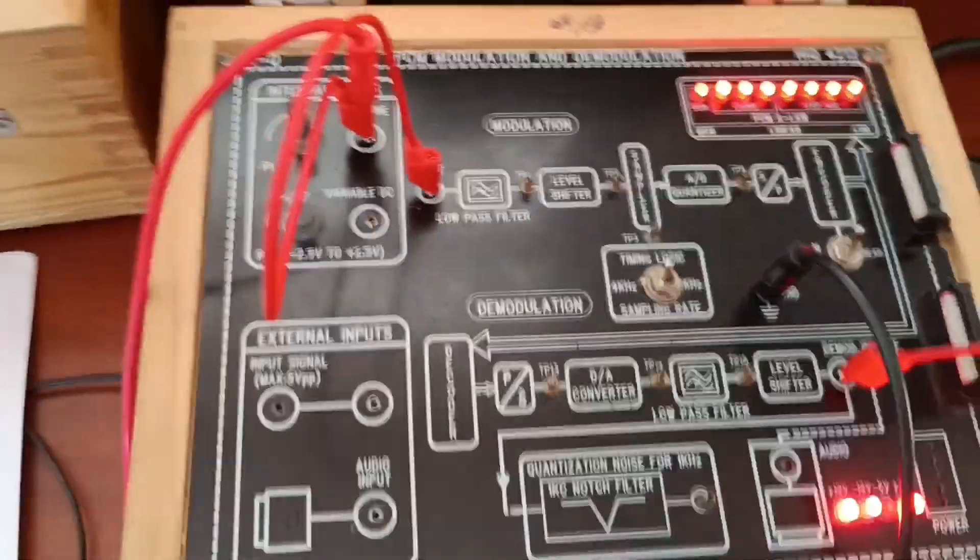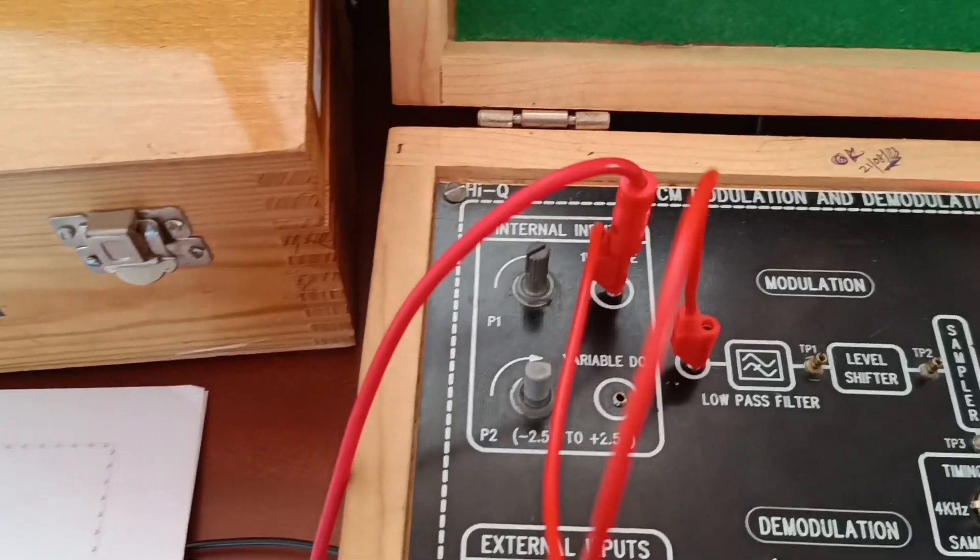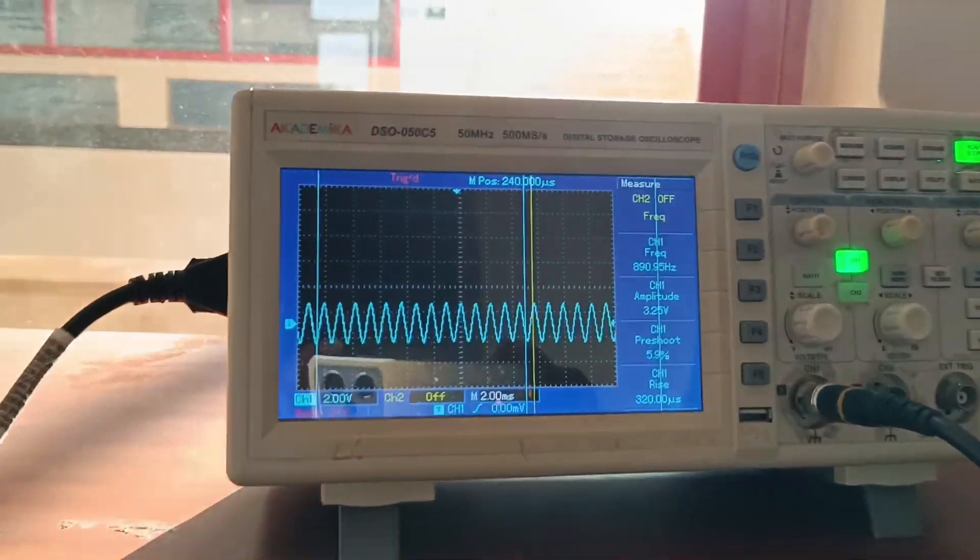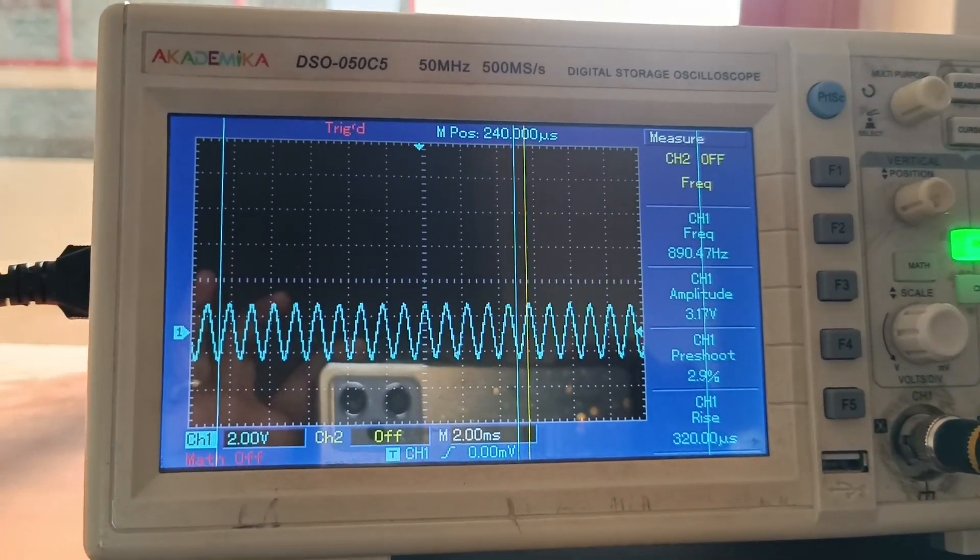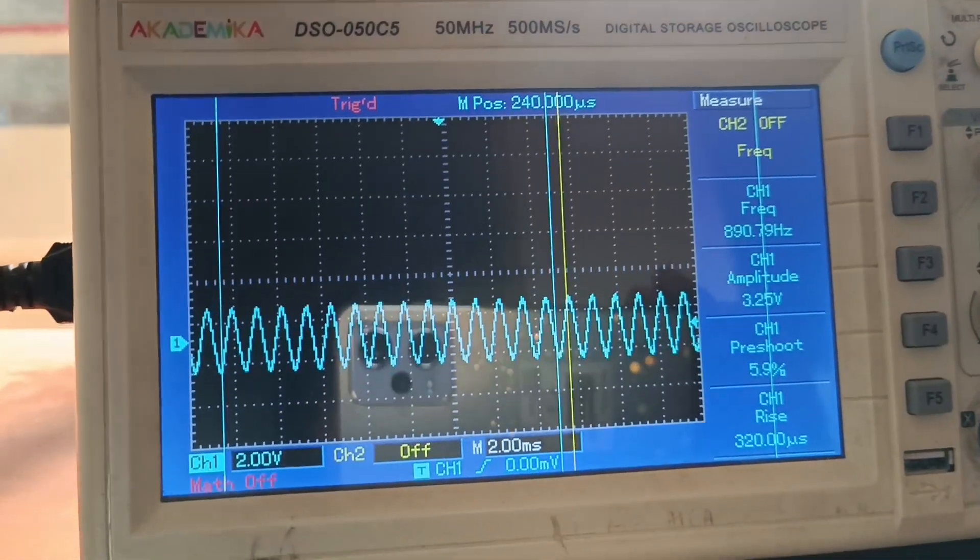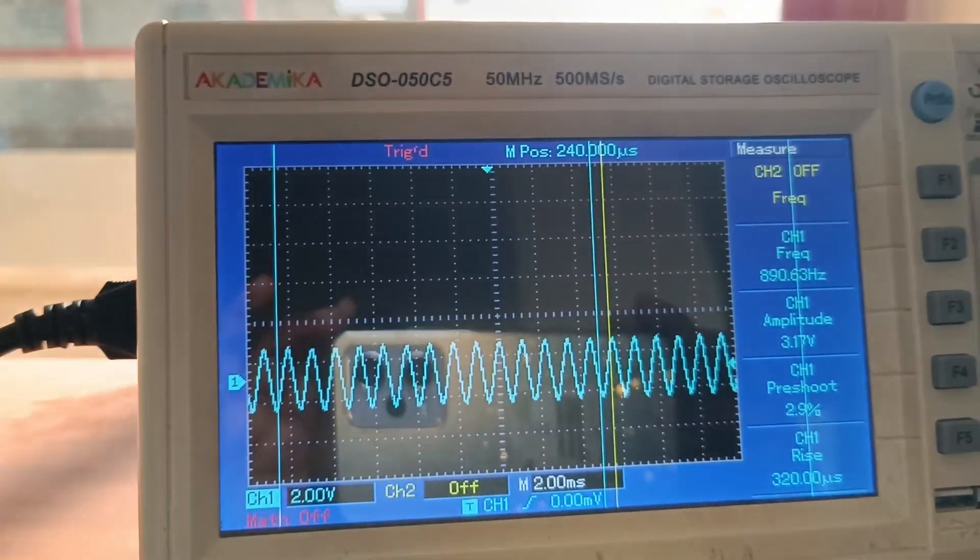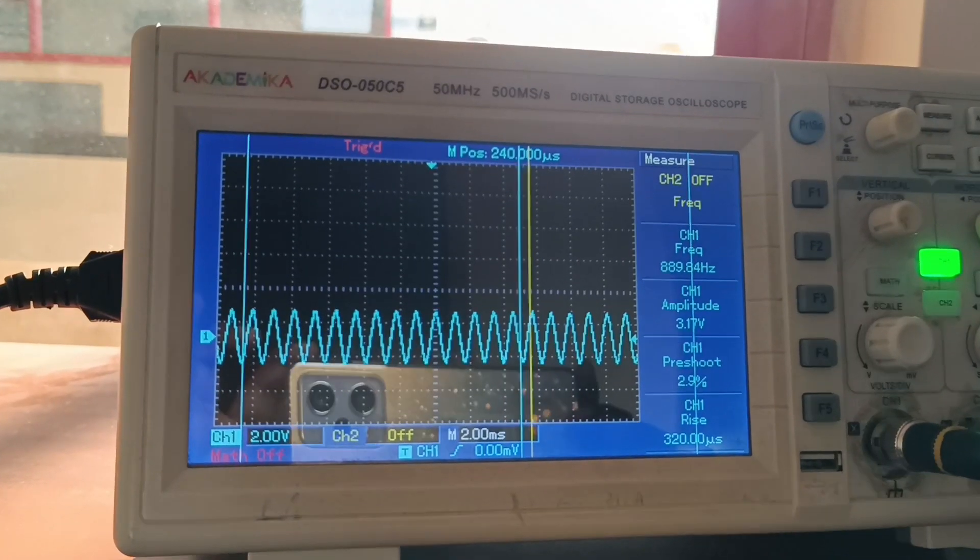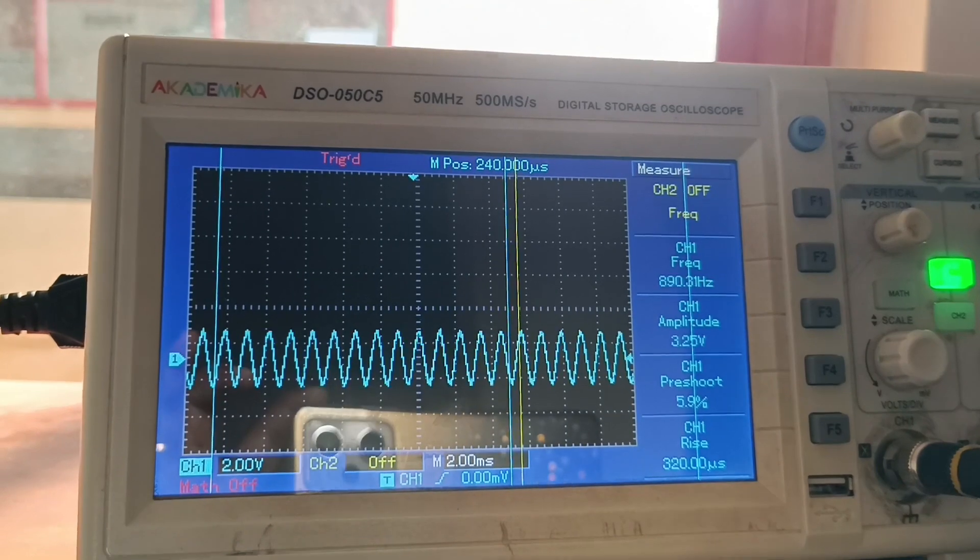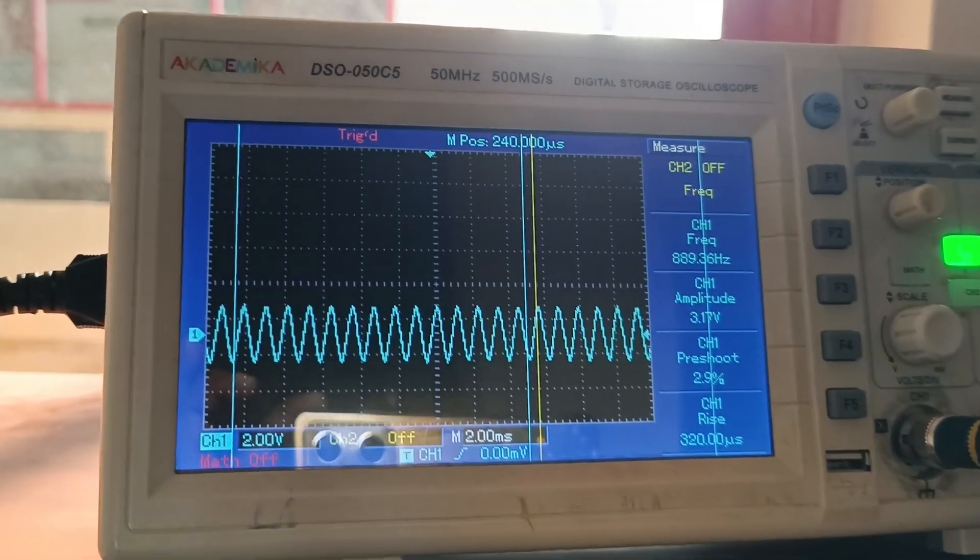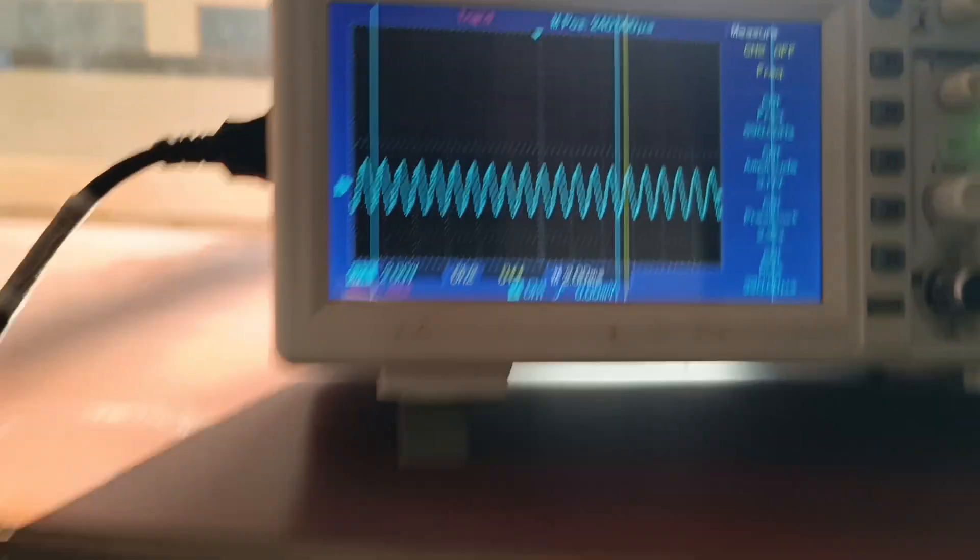First I am giving input from here. Observe here, this is the sine wave signal. Observe 890 hertz. I am giving total voltage. What do we have at here? Observe, 899 hertz and 3.25 amplitude.